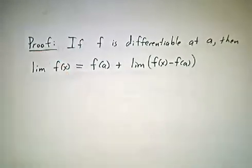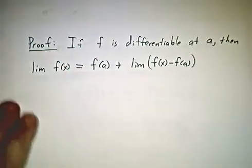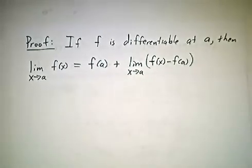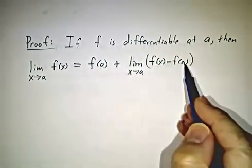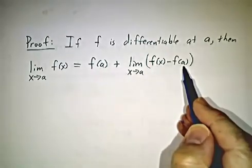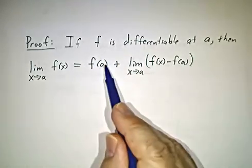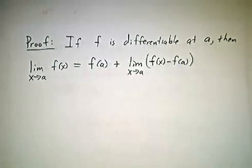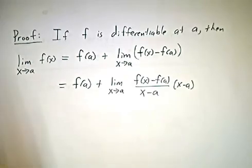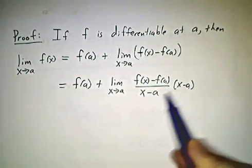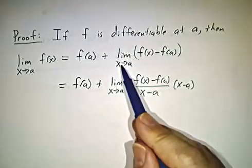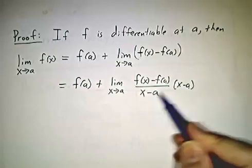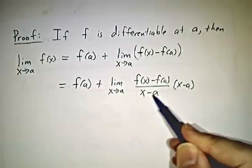So let's suppose we have a function that's differentiable at a, and we want to show it's continuous, so we want to compute the limit as x approaches a of f of x. I'm going to write f of x as f of a plus f of x minus f of a. And f of a is just a constant, so it pulls out, giving us f of a plus the limit of f of x minus f of a. Then I multiply and divide f of x minus f of a by x minus a. Our limit takes values of x close to, but not equal to a, so we're dividing and multiplying by a number close to zero but not equal to zero.